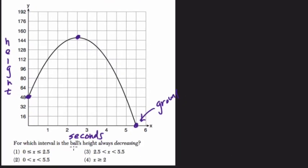For which interval is the ball's height always decreasing? So in other words, what part of this graph is the ball's height decreasing or going towards the ground? And that, you can kind of sketch it out,